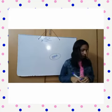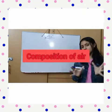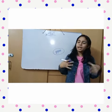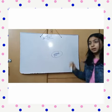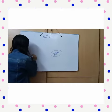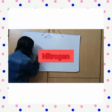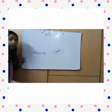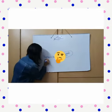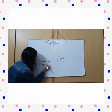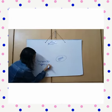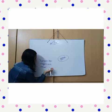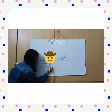Question number two: what is the composition of air? Air is a mixture of many other kinds of gases. In our air, nitrogen is 78 percent and oxygen is 21 percent. Other gases like helium, carbon dioxide, and many others make up 1 percent.